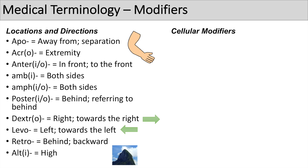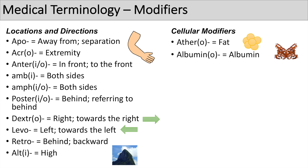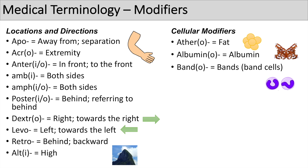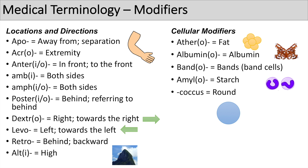There are also some cellular modifiers that weren't discussed in previous lessons. The first one is 'athero' or 'ather', which means fat — you might have heard of atherosclerosis. The next prefix is 'albumin' or 'albumino', which refers to the protein albumin in our blood. The next prefix is 'band' or 'bando', which means band cells or immature white blood cells — you might hear the word bandemia. Another prefix is 'amyl' or 'amylo', which means starch — like amylose or the amylase enzyme. The suffix 'coccus' means round, referring to round-shaped bacteria.